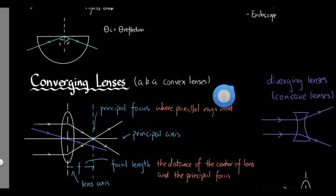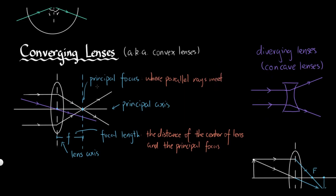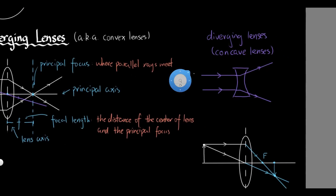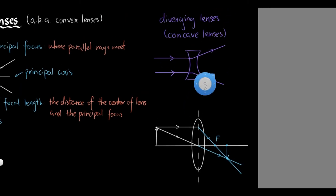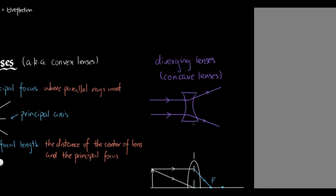To wrap up: today we learned about the key terms of converging lenses — principal focus, principal axis, focal length, and lens axis. We also talked about drawing a ray diagram that illustrates the formation of a real image by a single lens. And we talked a little bit about diverging lenses, although this is not on the curriculum. I hope it helps and I'll see you guys in the next video.